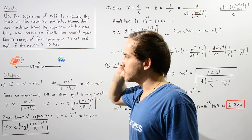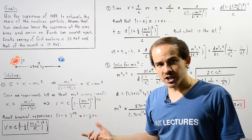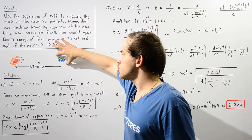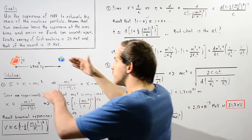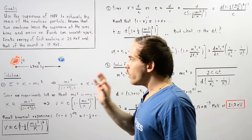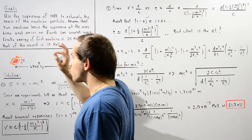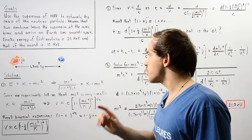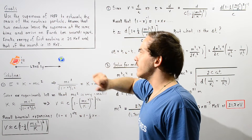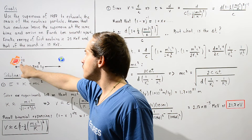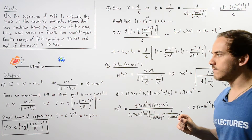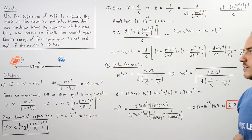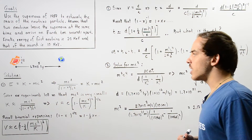When the supernova took place it released two neutrinos at the same exact time — neutrino 1 and neutrino 2. These neutrinos travel the same exact distance to Earth. We measure that neutrino 1 reaches Earth 10 seconds before neutrino 2. The kinetic energy of neutrino 1 is 20 mega electron volts while the kinetic energy of neutrino 2 is 10 mega electron volts. We'll break this problem into three steps.